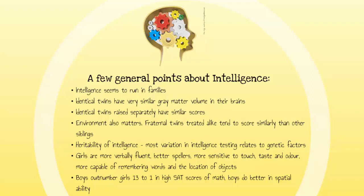But environment also matters. Fraternal twins who are treated alike tend to score more similarly than other siblings. Over time, adopted children score more like their biological parents than anyone else, so it's clear that there is an inheritability of intelligence. Most of the variation in intelligence testing relates to genetic factors, but early intervention can help — children in stimulating environments do very well. There's really no evidence to support 'super babies' if children are raised in a normal, stimulating environment.